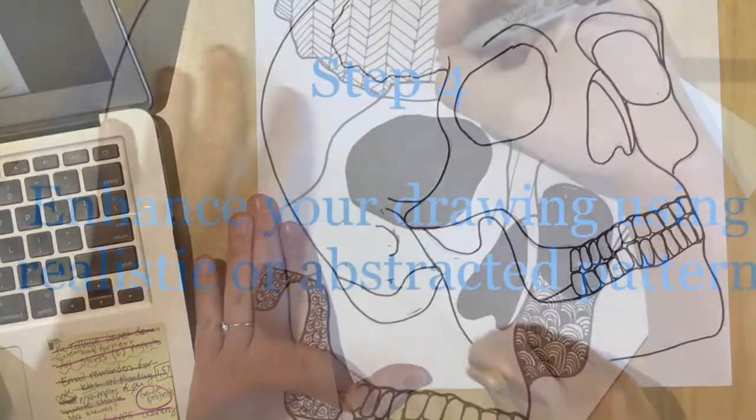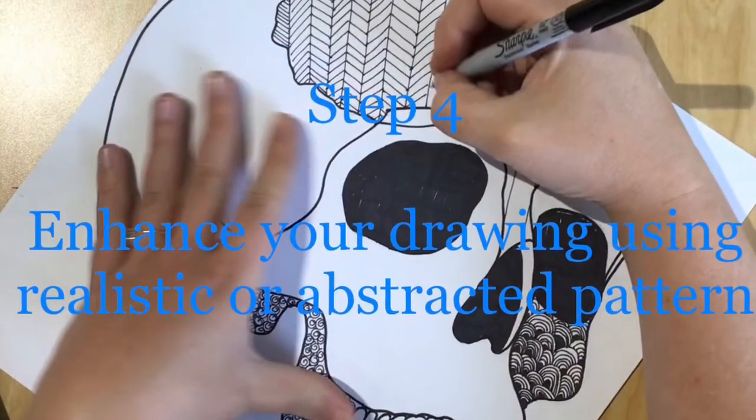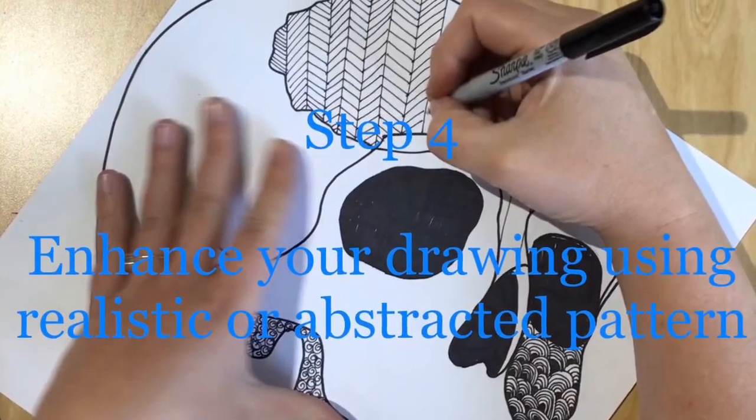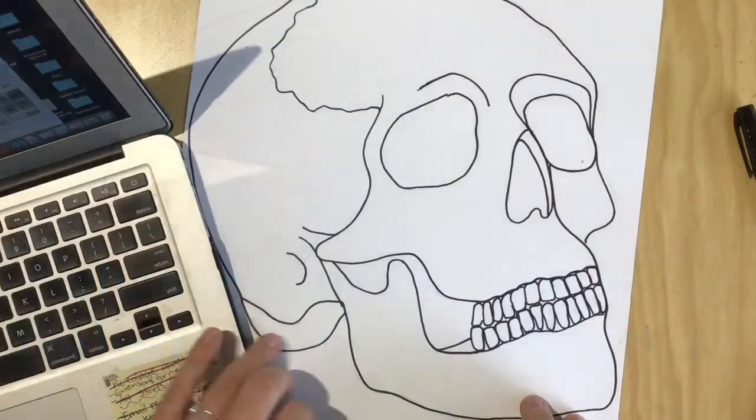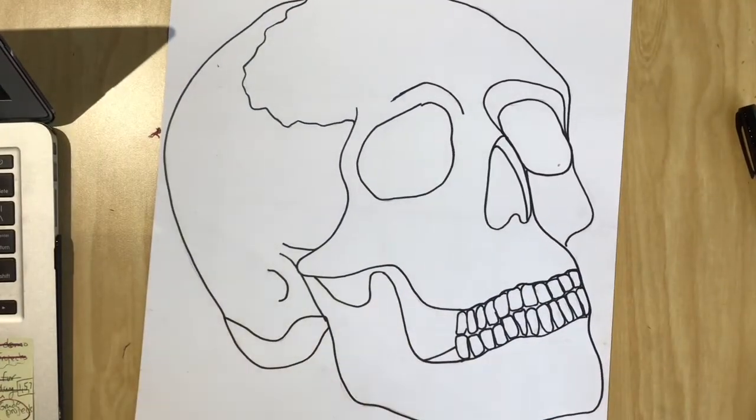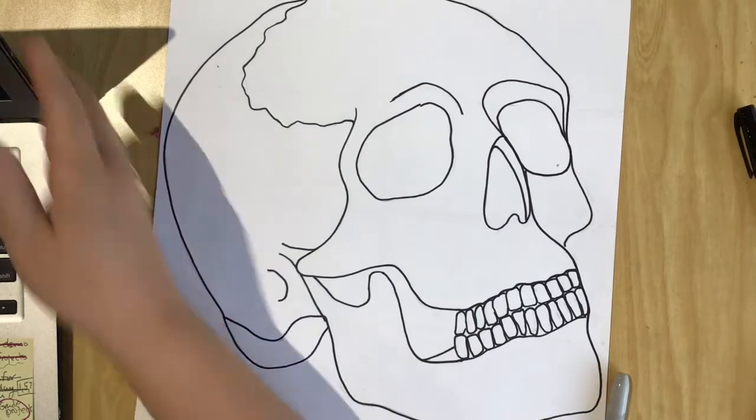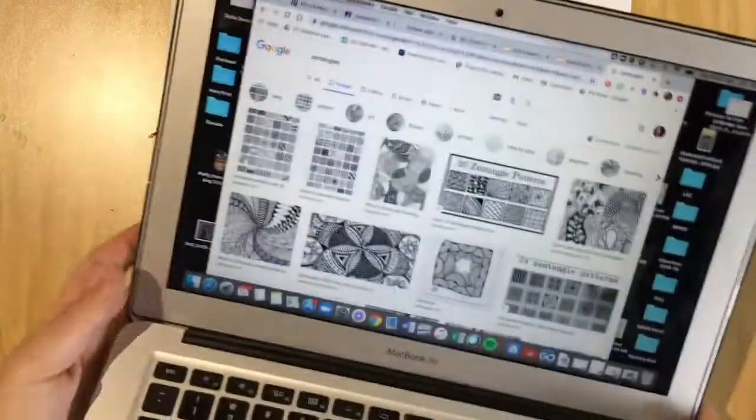Step four is to enhance your drawing using either realistic or abstracted patterns. So the first version I'm going to do more like pattern or abstracted textures. And on the internet, those are called Zentangles.